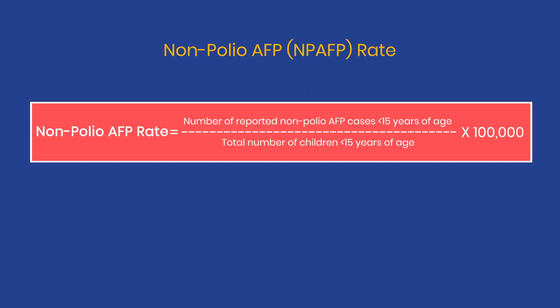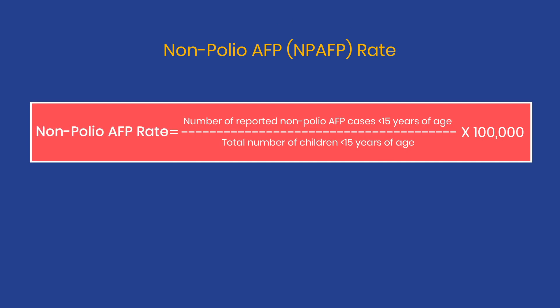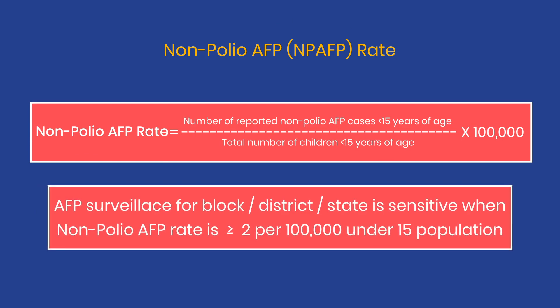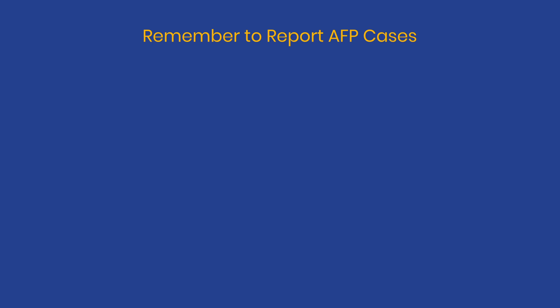The rate at which non-polio AFP cases occur is called the non-polio AFP rate. AFP surveillance for a block, district, or state is considered sensitive when the non-polio AFP rate is 2 or more per 1 lakh under-15 population.